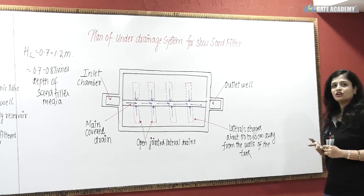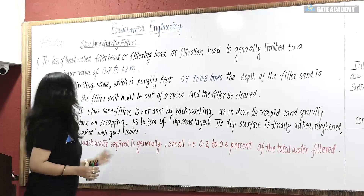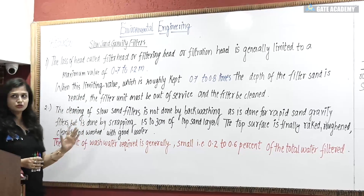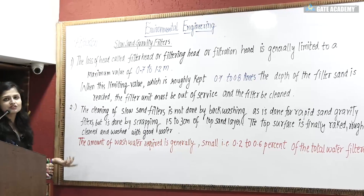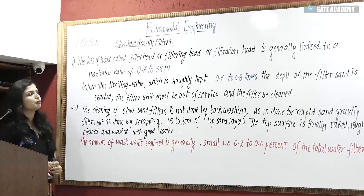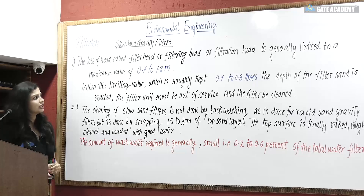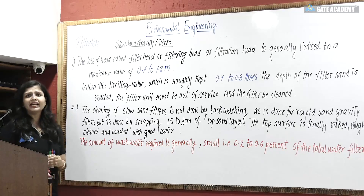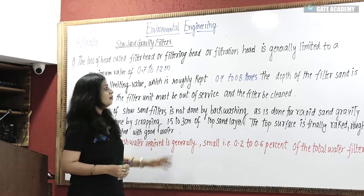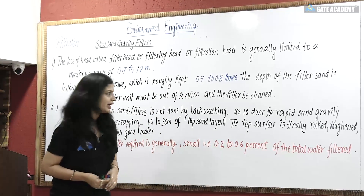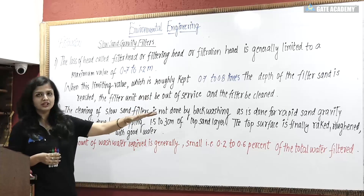Now let's note down the important points. The loss of head, called filter head or filtration head, is generally limited to a maximum value of 0.7 to 1.2 meters. When this limiting value, which is roughly 0.7 to 0.8 times the depth of the filter sand, is reached, the filter unit must be taken out of service and cleaned.